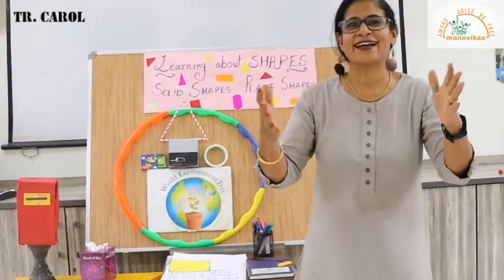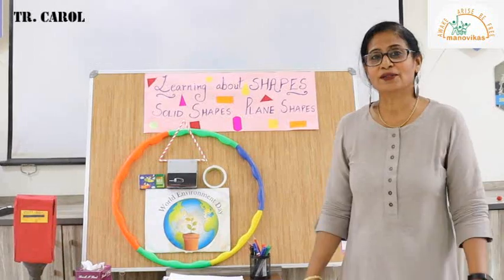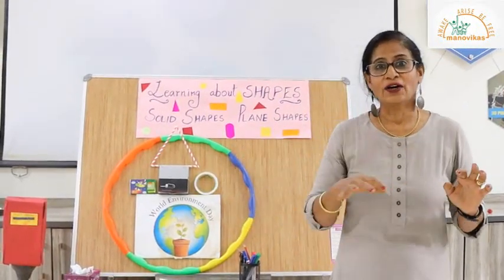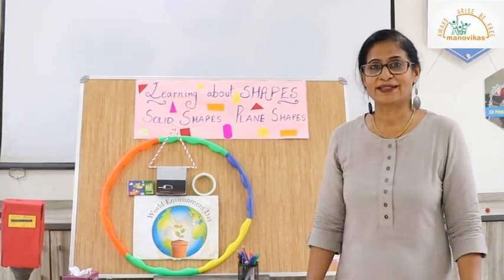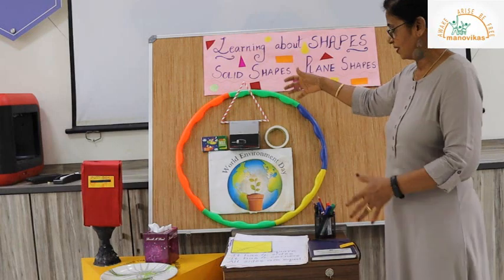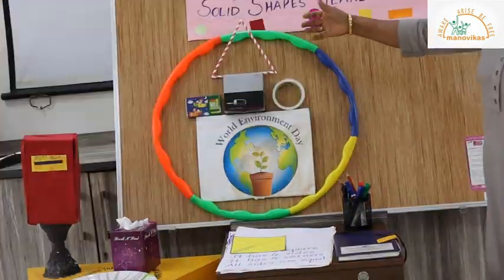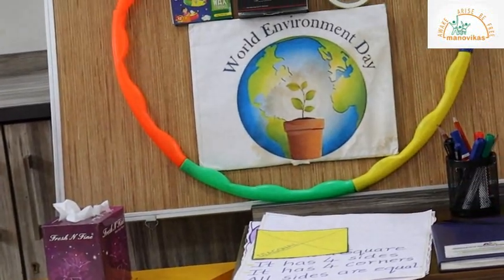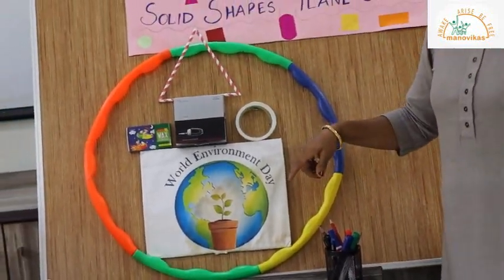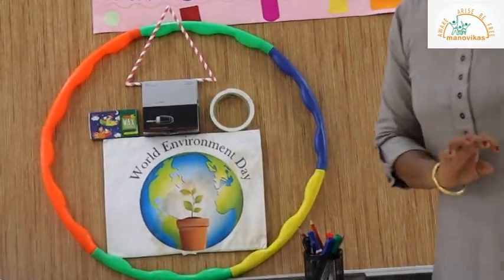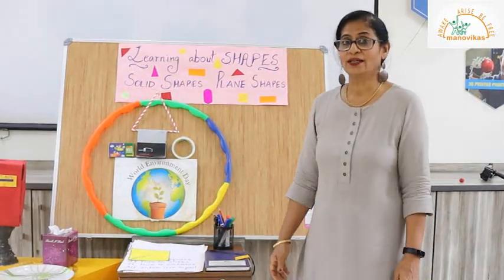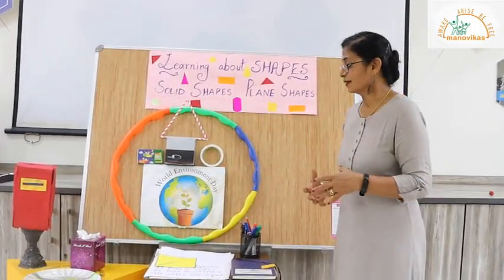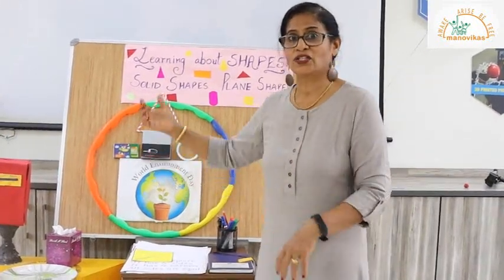Hello students! I'm very excited today because we are going to learn about shapes. I want you to identify five different shapes in your surroundings and describe them to your parents. Take a closer look at the teacher's table — many different shapes are displayed. There are shapes like the circle, the triangle, the square table, a hula hoop which is round, and a color box which is a rectangle. Shapes in our surroundings can be differentiated into plane shapes and solid shapes.